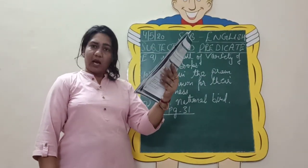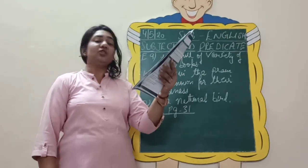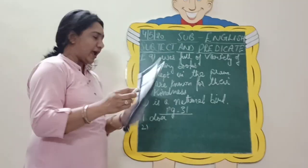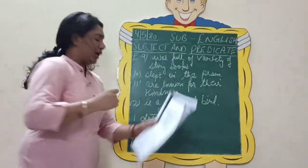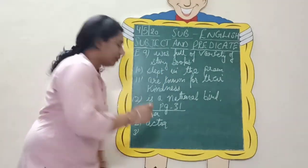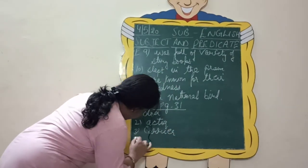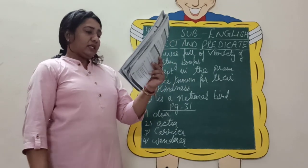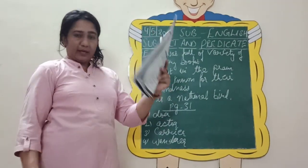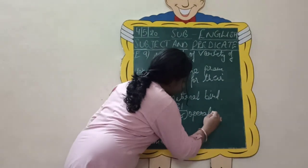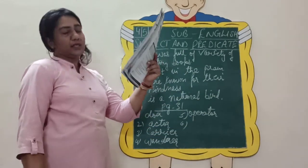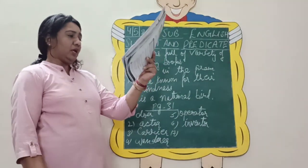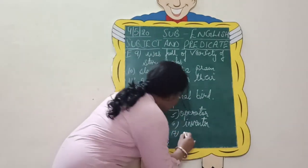The exercise says: add the suffixes -er, -r, or -ier to change these verbs into nouns. Number 1: 'do' becomes 'doer.' Number 2: 'act' becomes 'actor.' Number 3: 'carry' becomes 'carrier' — we add -ier. Number 4: 'wander' becomes 'wanderer' — simply add -er. Number 5: 'operate' becomes 'operator.' Number 6: 'invent' becomes 'inventor' — one who invents something. Number 7: 'purify' becomes 'purifier.'